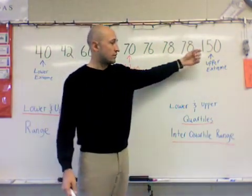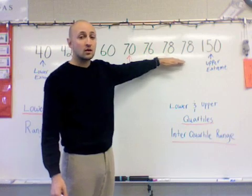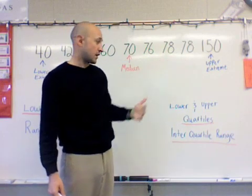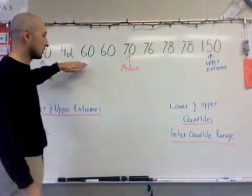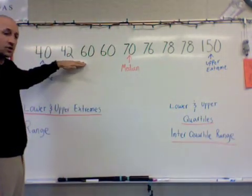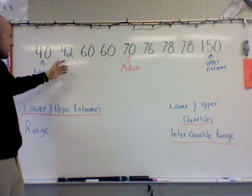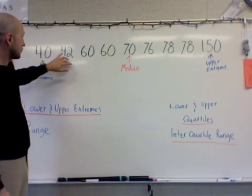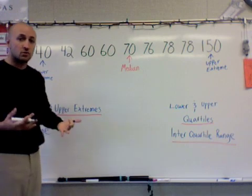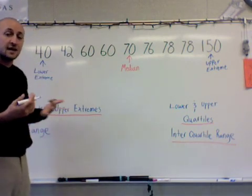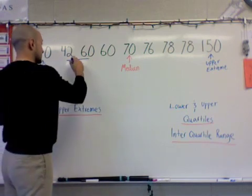Well, we've got one, two, three, four numbers. Even set means I'm going to end up picking two of them, adding them together, and dividing by two. Well, let's start with the lower. The lower quartile will always be on the left side of the median. So if I look here, I've got 40, 42, 60, and 60. I know that these are my middle two numbers. So those are the two numbers, two values that I want to add together and then divide by two.